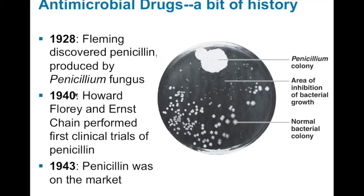Between 1928 and 1940, there was a lot of work going on with penicillin. Basically, they tried to purify it and make it usable in humans. In 1940 they did clinical trials, and by 1943 it was on the market. It was the first antimicrobial drug available and was considered a miracle cure for bacterial infections — it ushered in what you could call the golden age of Western medicine, which we are slowly coming out of.